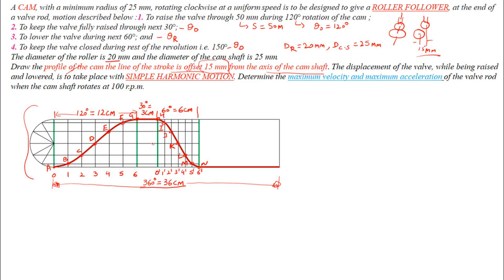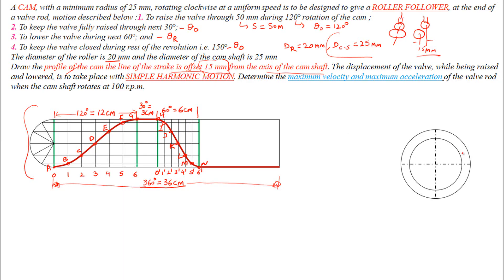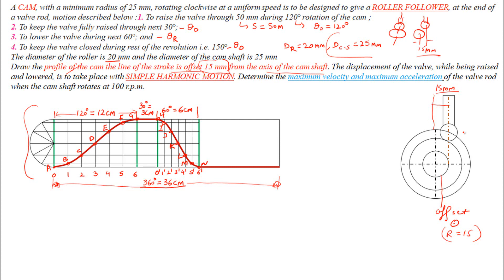To make the cam profile, first we need to find the radius of the cam shaft, which is 25 mm in this question. Draw a circle of radius 25 mm as the base circle, then draw the prime circle using the standard formula explained in the previous video. Now draw one more circle — the offset circle — with a radius of 15 mm, because the follower axis is offset by 15 mm from the cam shaft axis.